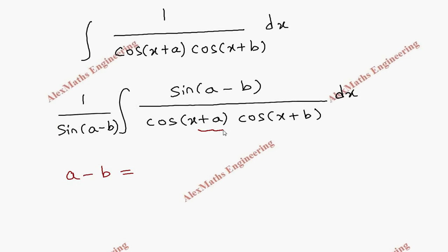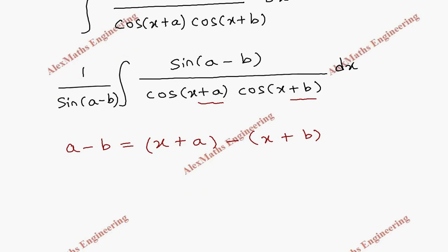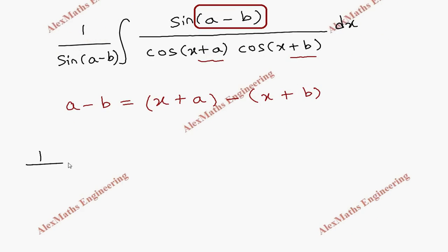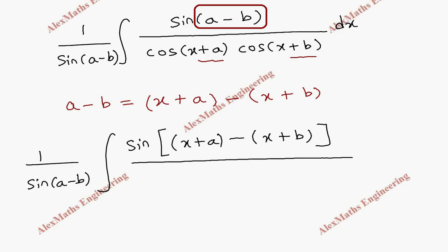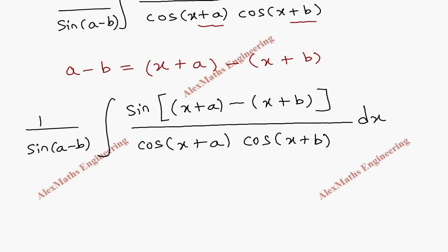We are going to write (a-b) in terms of (x+a) and (x+b). For that, I take (x+a) minus (x+b). When I simplify this, the x terms cancel and I am left with a minus b. So just a small rearrangement, and we are going to do the substitution only in the numerator. Outside we have 1/sin(a-b), and the integral has sin[(x+a) minus (x+b)], with the denominator written as it is.